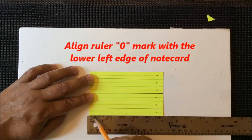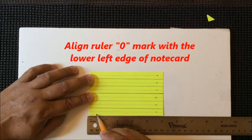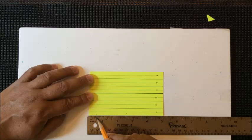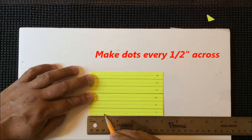Starting with the zero mark, measure in a half an inch and place a dot right at a half an inch. Then go another half an inch. So a half plus a half equals one full inch.